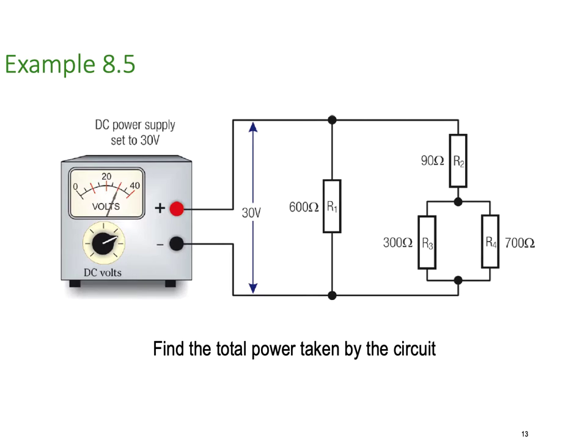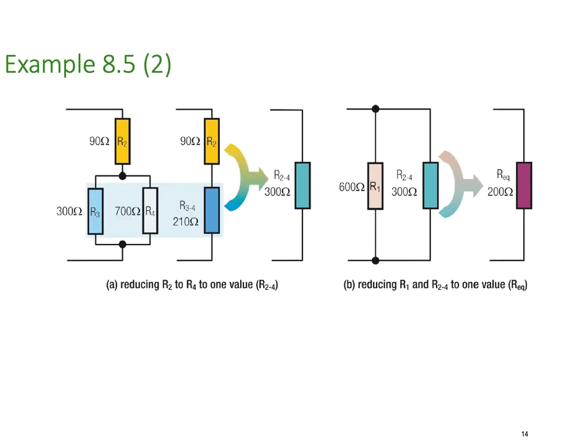Let's look at a little example when we're going to find the total power taken by this particular circuit. We've got 30 volts applied. We've got a 600 ohm resistor in parallel with a network that has a 90 ohm and a 300 and a 700 in parallel with it. Let's reduce the parallel straight up.